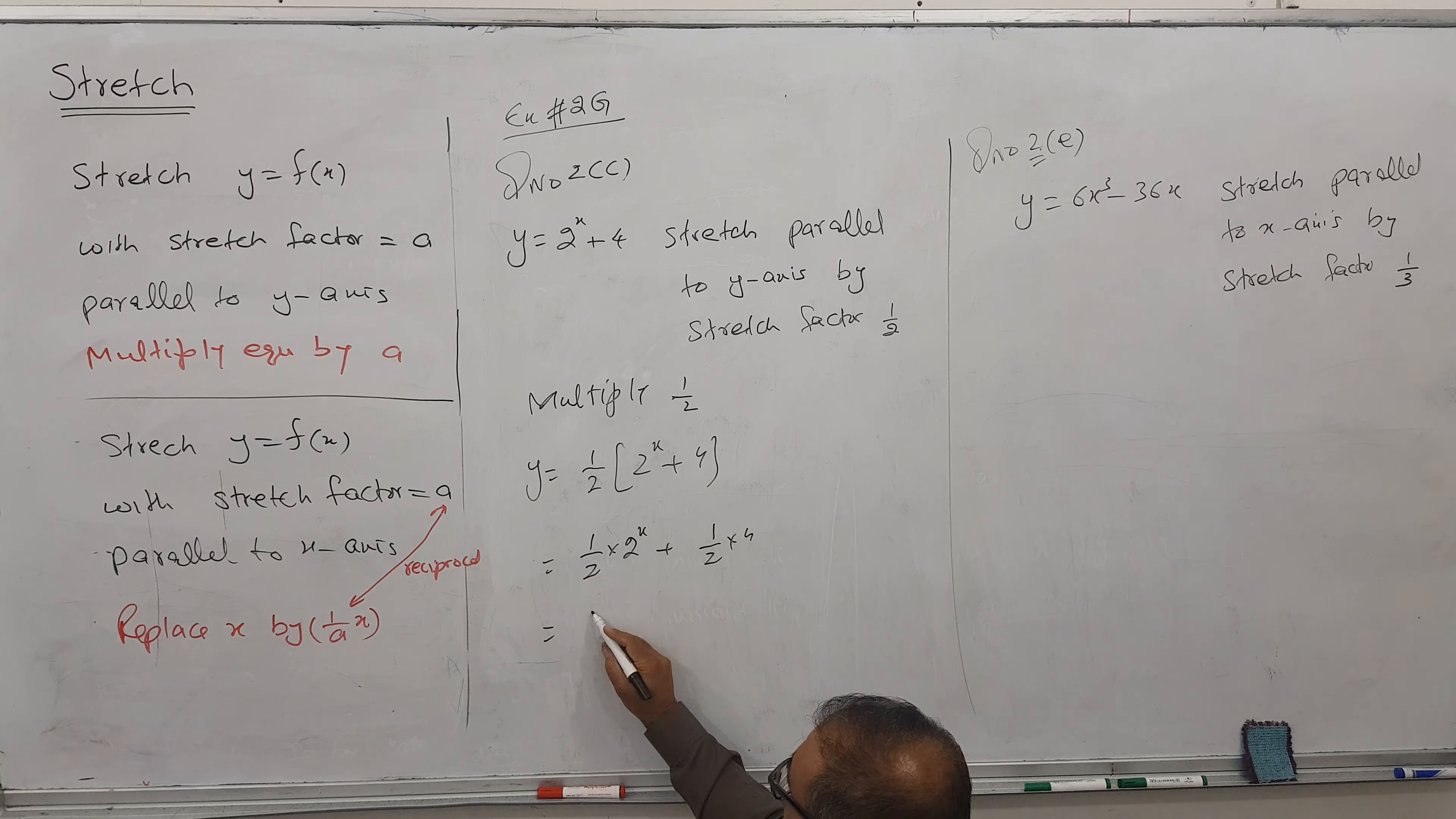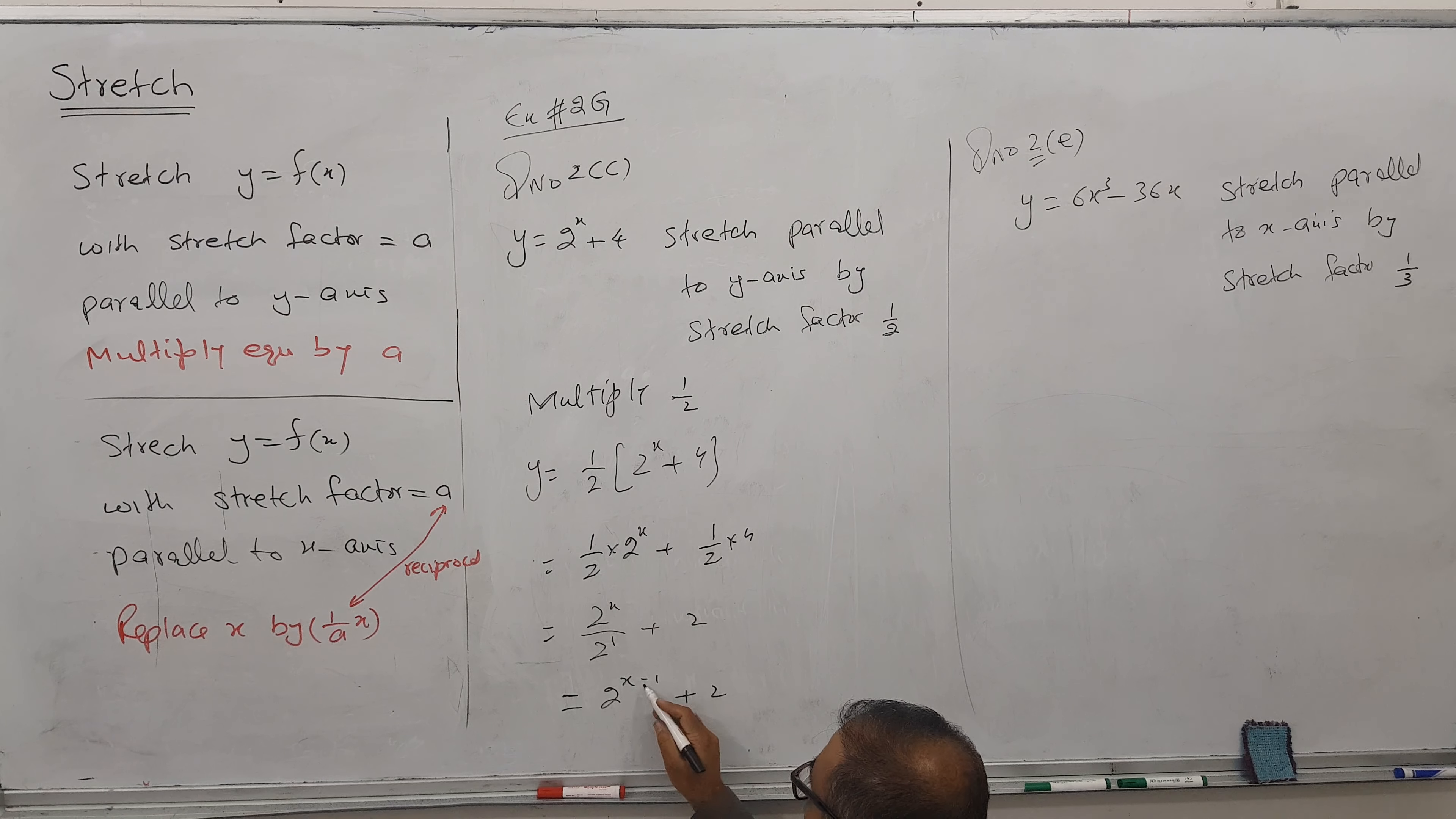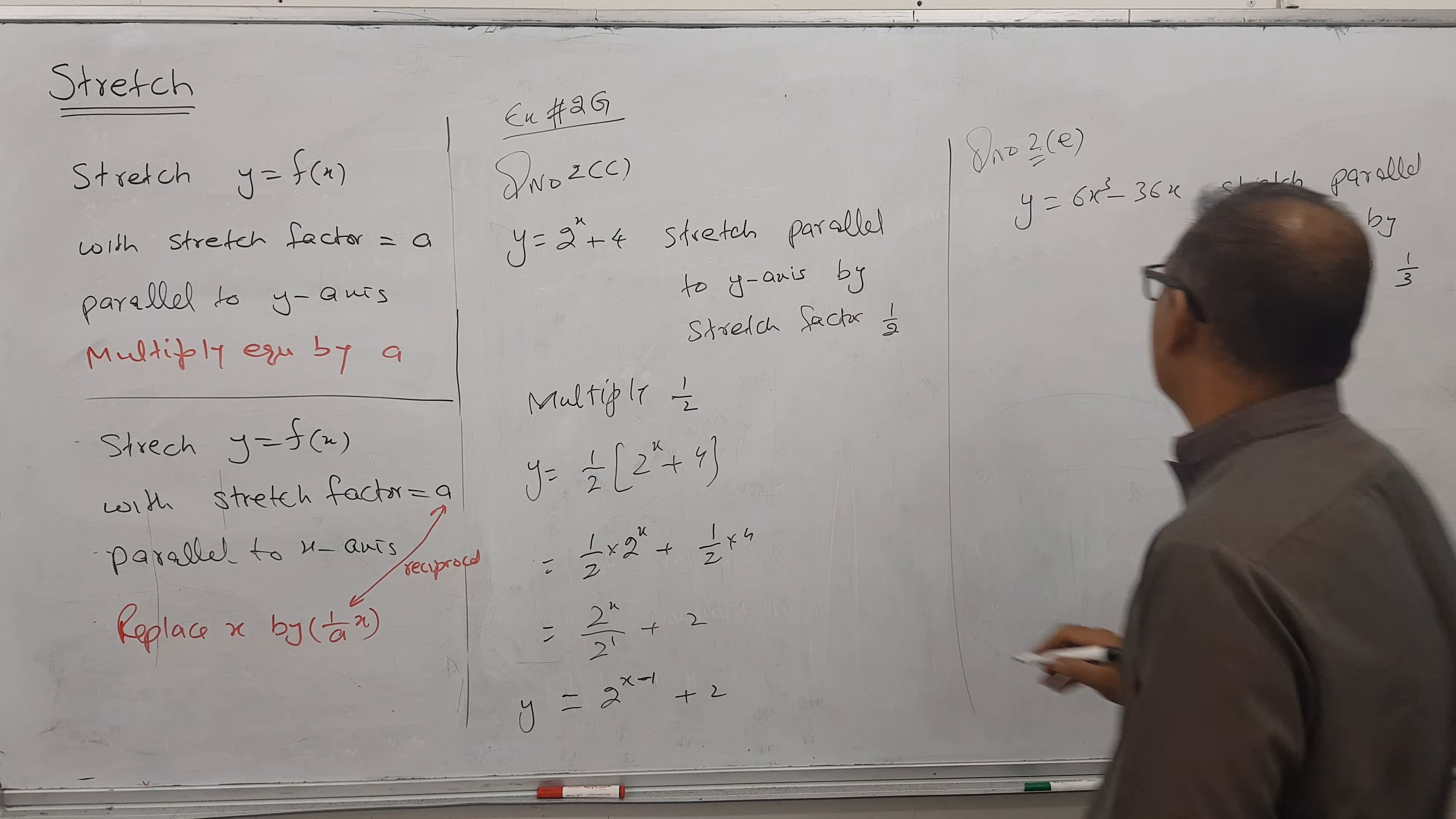So this is coming because power is 1. So 2^x/2^1. And this is coming 2. It goes up. And this is the property. So x - 1. This is our answer for question number 2c. This is x - 1, power is x - 1.